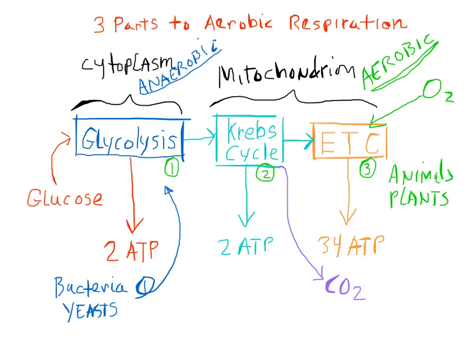Just look at the benefit — if you breathe oxygen like an animal, you can get a whopping 38 molecules of ATP from every molecule of glucose that enters the system. Bacteria, on the other hand, can only get 2 ATP from each molecule of glucose, and the rest is wasted.